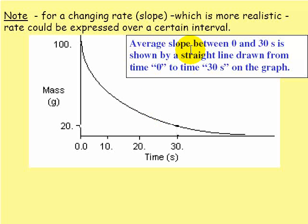What we can do is take the average slope of any time period, and that gives us an idea of the rate during that time period. Let's say we want to take the average slope between time 0 and time 30. What we do is draw a line from time 0 to time 30 on the graph, and then we take the slope of that line.